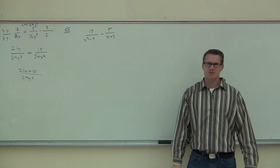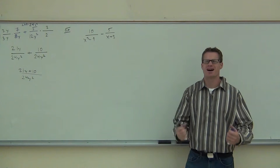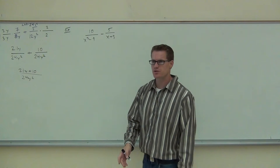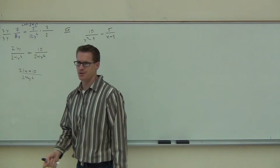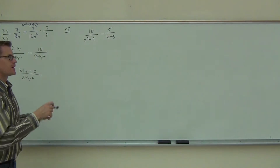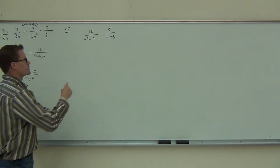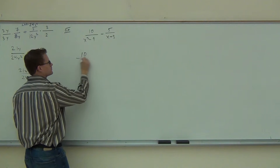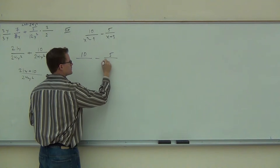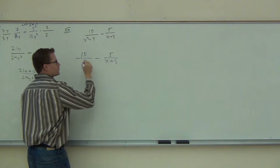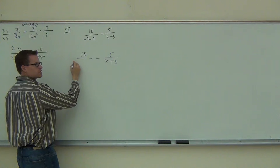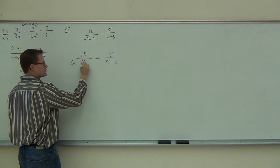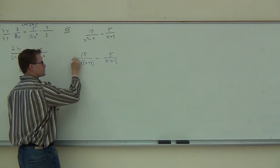What's the first thing you do every time? Factor the denominator—not the numerators, we don't care about the numerators, but the denominators yes. Let's factor that together. The first one, you need to be seeing that's the difference of squares: x minus 3, times x plus 3. That should almost be coming automatically to you at this point.